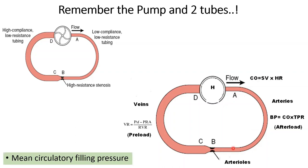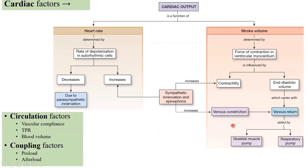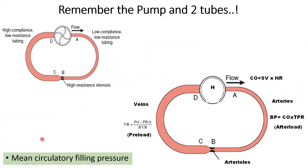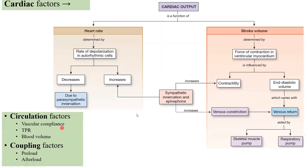Blood volume is another circulatory factor — if the overall volume of the system exceeds normal, cardiac output is influenced. All of these cardiac and circulatory factors will be quantified in detail in lecture two. Consider this lecture a chunky conceptual overview of those components.